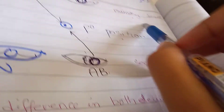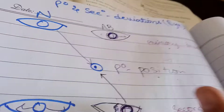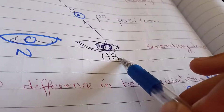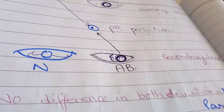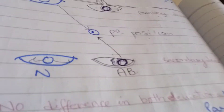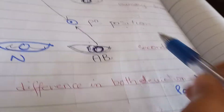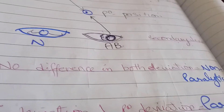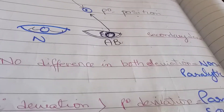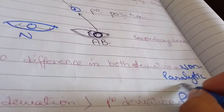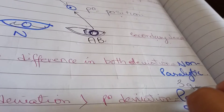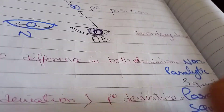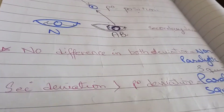In non-paralytic squint, there is no significant difference: in primary deviation there won't be any notable deviation difference, and in secondary deviation there won't be any notable deviation difference either. If there is no deviation difference between the primary and the secondary, then the squint is called non-paralytic squint. I hope you are clear. Jazakallah.